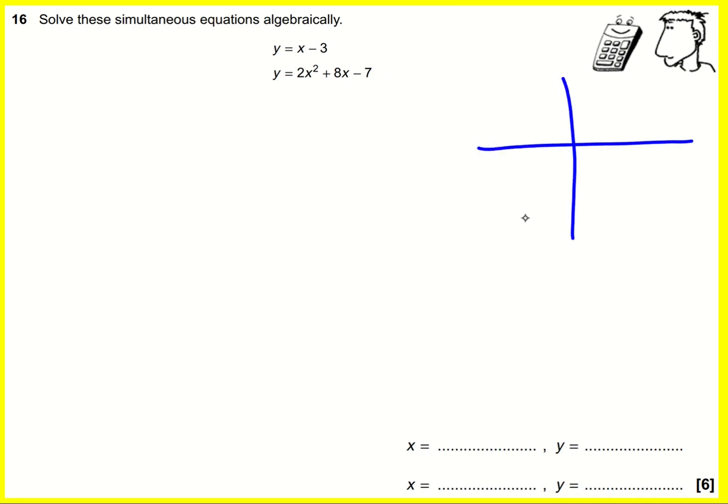y equals x minus 3, gradient of 1, intercept at minus 3, it will look a bit like this. And the other one is a quadratic, goes through at minus 7, perhaps it comes back up like so. What we are interested in is where they intercept.